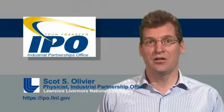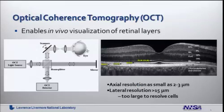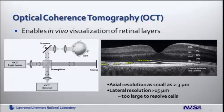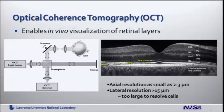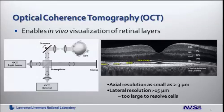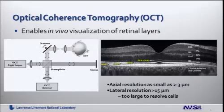Starting about 15 or 20 years ago, a technique called optical coherence tomography started to be developed for retinal imaging. A schematic of this technique is shown on the left of this chart. It uses light shown into the eye and also into a sample arm, then combined to create a reflected image shown at the right-hand side of the chart for a normal eye, where you can see the individual layers of the cells that are important in the function of the eye.